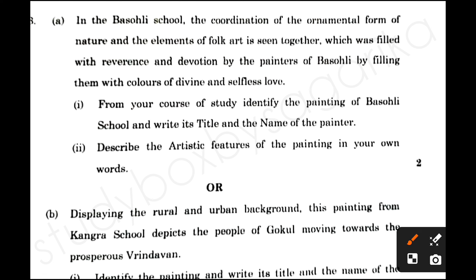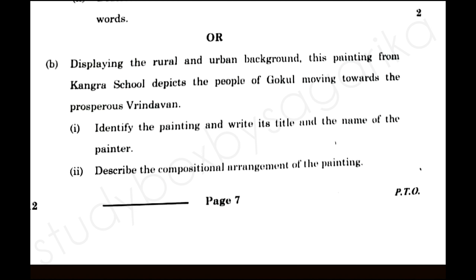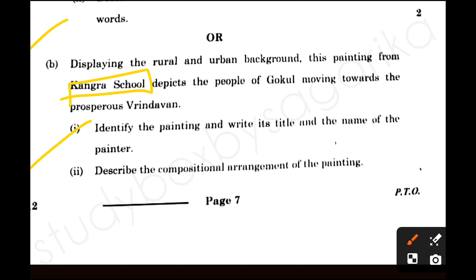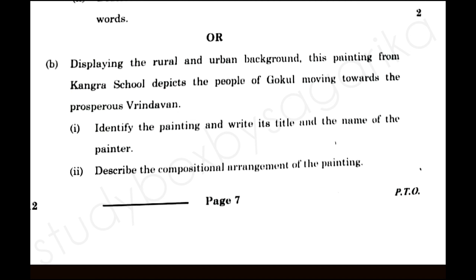You have to tell about coordination and ornamentation in Basoli school. In Basoli school you have only one painting — 'Krishna with Gopis' — about which you have to tell everything: title, name of the painter, and all artistic features. Next, for Kangra school, you have to tell one painting from Basoli school and one from Kangra school, mentioning people moving to another place. The answer is 'Anand — Yashoda and Krishna with Kinsmen Going to Vrindavan.'